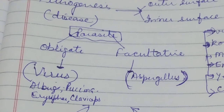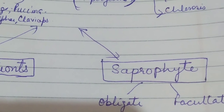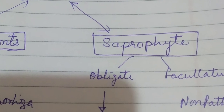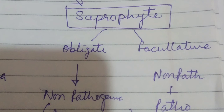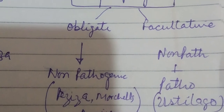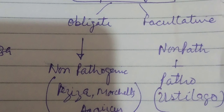Now the question is: how do these parasites evolve in nature? This is a topic of debate — whether the parasites evolved from saprophytes, or the saprophytes evolved from parasites. Saprophytes are microorganisms that live on dead organic matter and obtain their food from decaying or dead materials. There are also two types: obligate saprophytes and facultative saprophytes. Obligate saprophytes are non-pathogenic in nature because they obtain their food from dead and decaying organic matter.